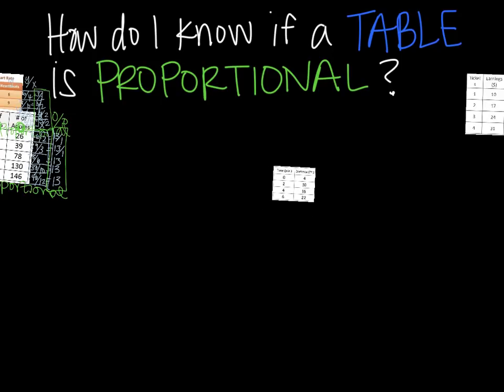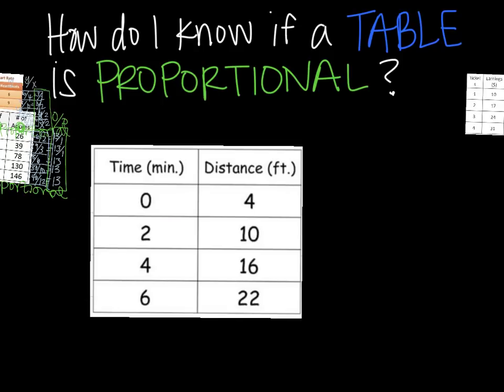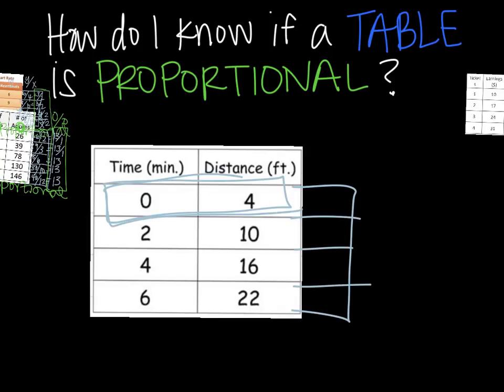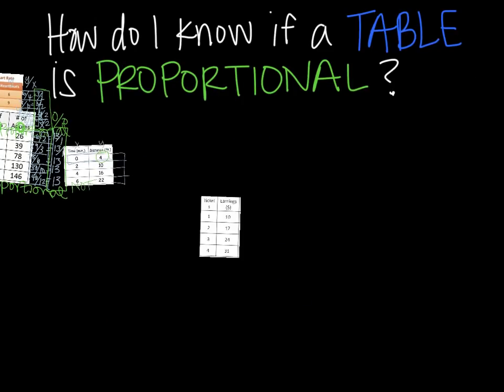A couple more to take a look at. Again, extend the table. Now, I actually don't even need to go any further. Because if I look here, okay, x is 0. Y should be 0. Because it has to go through the origin. It's not. So I can stop right there. It is not proportional. Just because I don't have 0, 0.